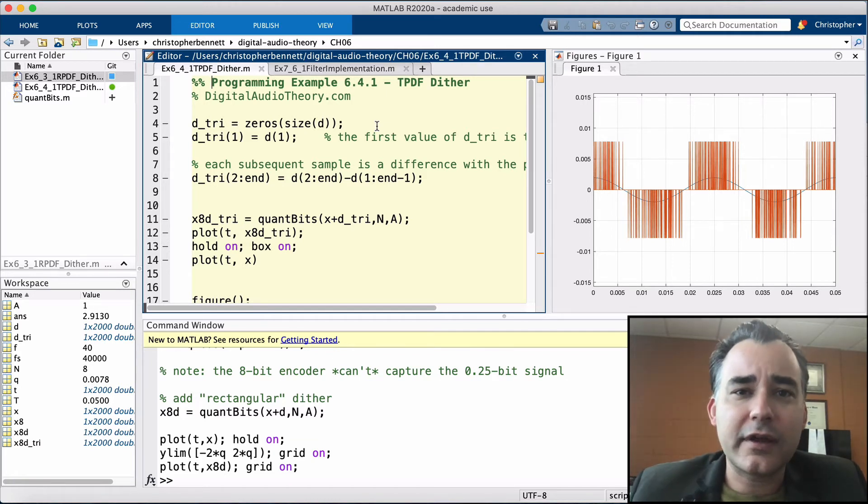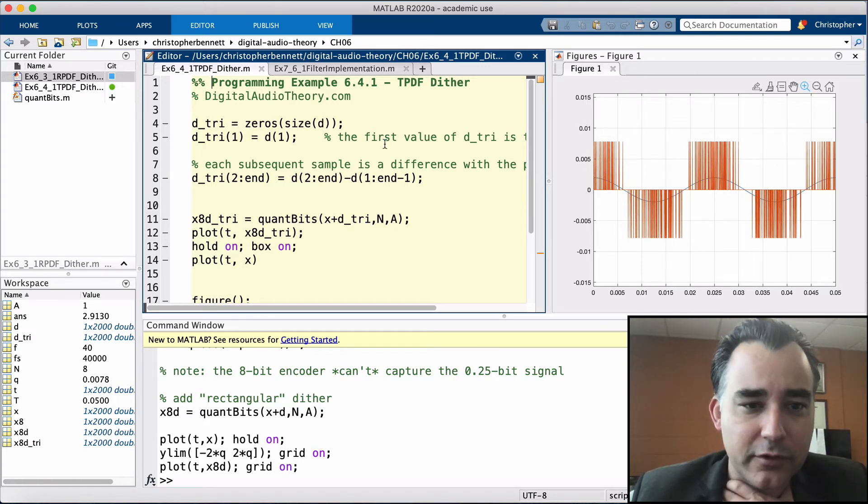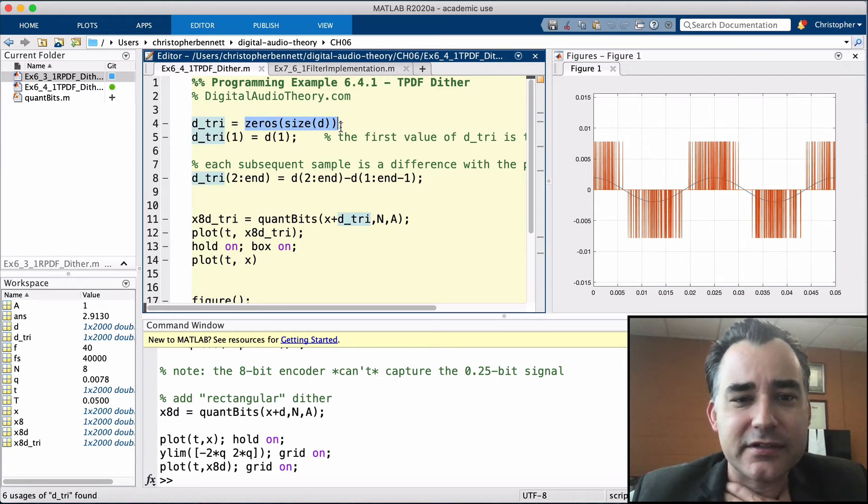So first let's load in the low-level 40Hz signal sampled at 40k with our PDF dither from the previous example. We've done that already and we can see this in our plot. Next, we will add this triangular dither to the signal and quantize. So first, let's generate our triangular dither. We're going to call this DTRI and it's going to be the exact same size as our RPDF dither. And we need to initialize it. So we're going to set its very first value to be the same as the RPDF dither.